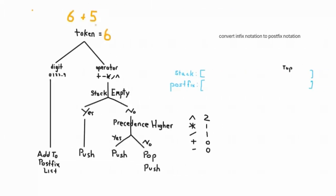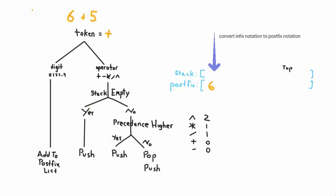Let's convert this infix notation expression to postfix. We begin with the first token, six. We do a test: is it a digit or an operator? This is a digit — follow the lead, add to the postfix list, so we write six. The second token is the plus symbol. We do the test again: is it a digit or an operator? This is an operator. Now look at the stack — is it empty? Yes, it is empty. Follow the lead: it says push. We've added the plus symbol to the stack.